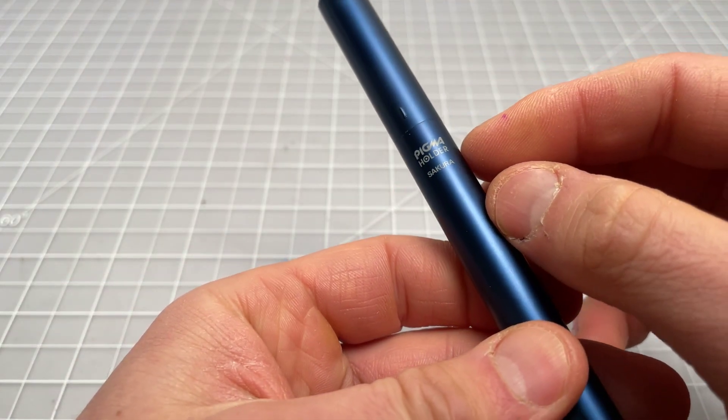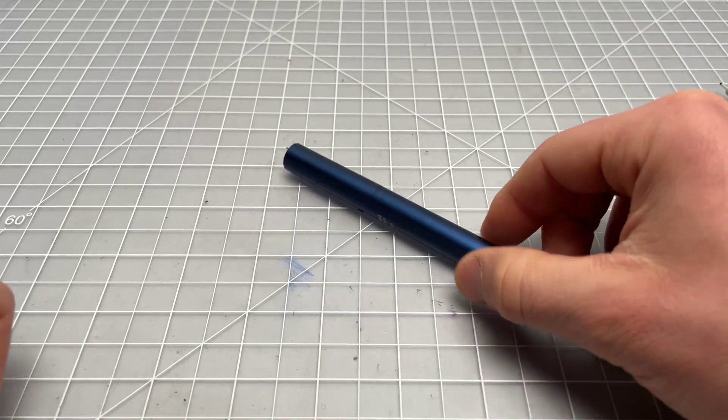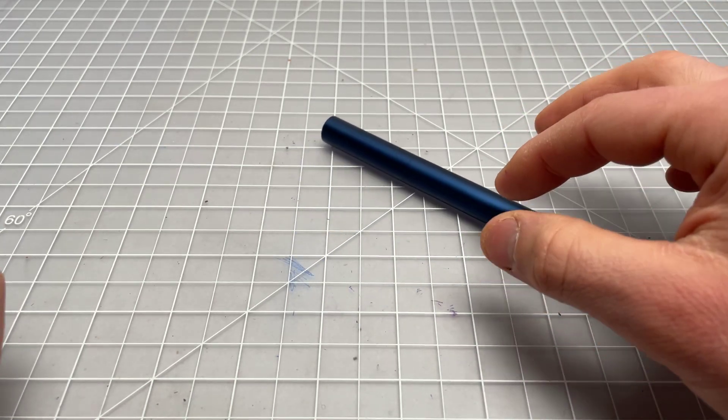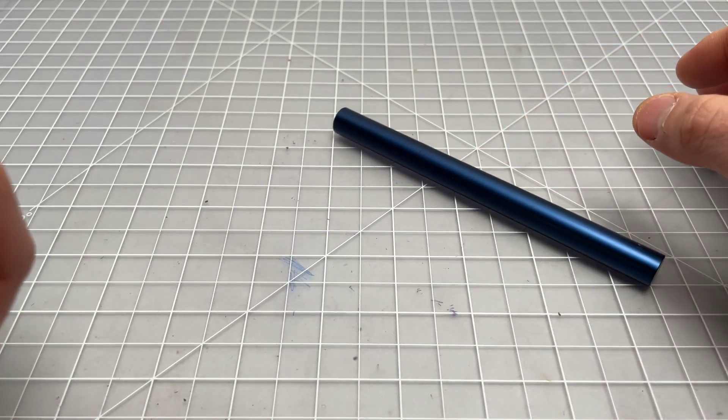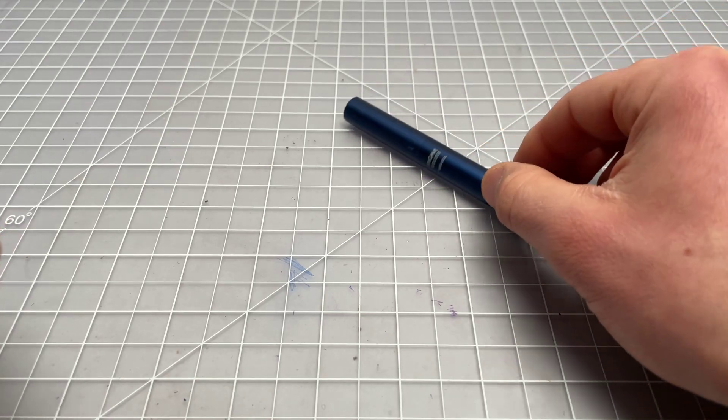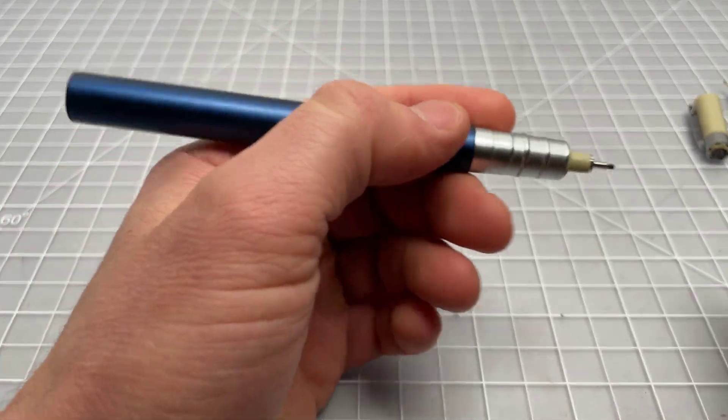The only accessories or extra elements on the holder are the roll stop and the logo. It says Sakura Pigma Holder. And then the roll stop, well, it's pretty small. Will it stop it from rolling? I guess. But it is just a tiny little nub. So it's not going to stop it if you put it down and drop it. But if you put it down flat, it will stop it. So it does its job there.